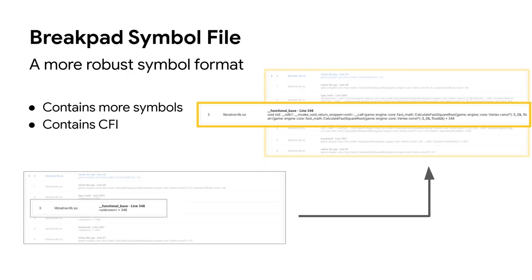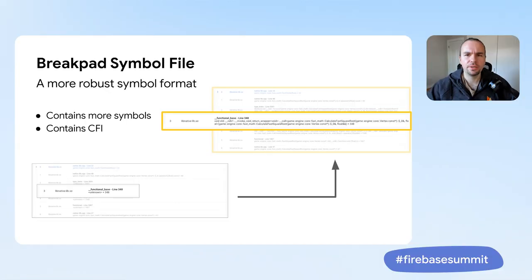The Breakpad symbol file also contains call frame information, which helps our backend with unwinding the stacks that ultimately get displayed in the Crashlytics console. Without this information, the unwinding mechanism relies on heuristics that can be inaccurate in a lot of cases. Ultimately, a more accurate set of application frames within the crash stack helps you get to the root of the problem more quickly. The symbol generation mechanism will even work on stripped binaries where you don't have access to their unstripped counterparts, as is the case with a lot of third-party SDKs.